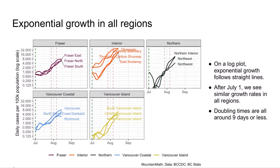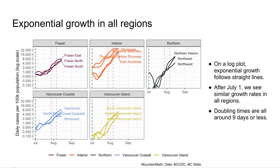The numbers have been higher in the Okanagan and Kootenay boundary, but the growth rate — which is the critical feature — is pretty consistent across the province. We are seeing doubling times of around nine days or less throughout BC.